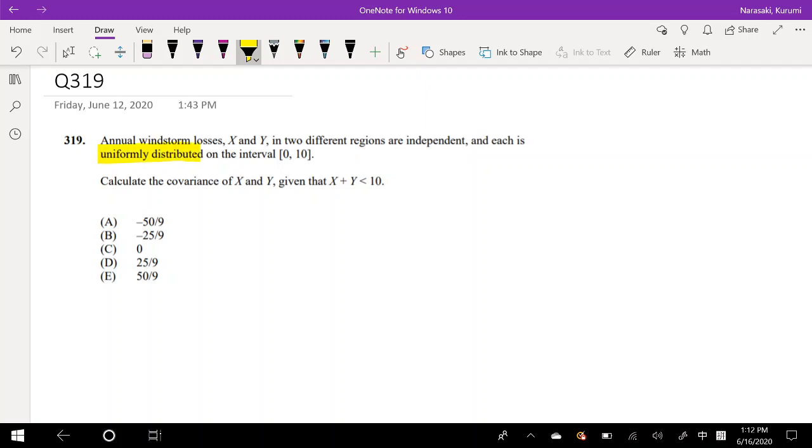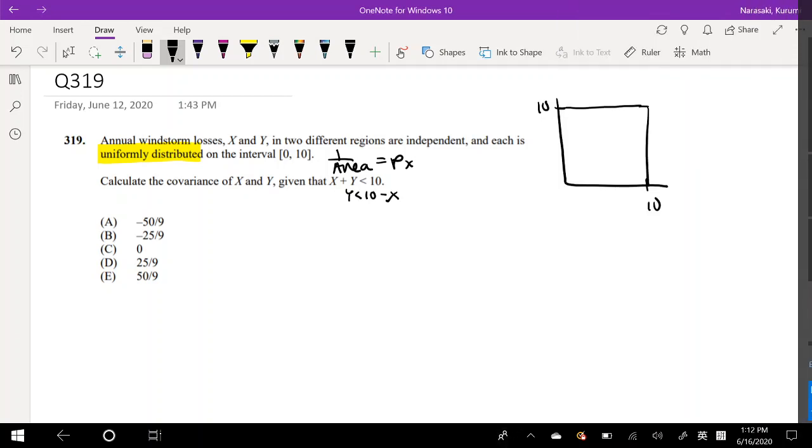Well, the first thing I noticed is that they say uniformly distributed on 0 to 10. So let me actually draw this picture real quick. So this is 10 and 10. So this probability function exists on that area, and it's 1 over the area of their probability. And it says calculate the covariance of x and y given that x plus y is less than 10. So I'm just going to solve this for y so you can actually see it in slope form. So this you can see is the intercept 10 with the negative 1, 1. Wait, it's a 10, 10. So it's going to be like this. And it's y is less than 10 minus x. So that means it's on this side right here. So this is our function, or this is our function given the conditions.